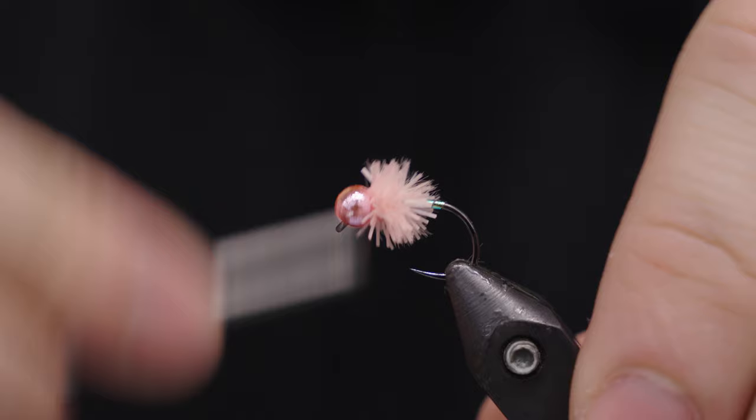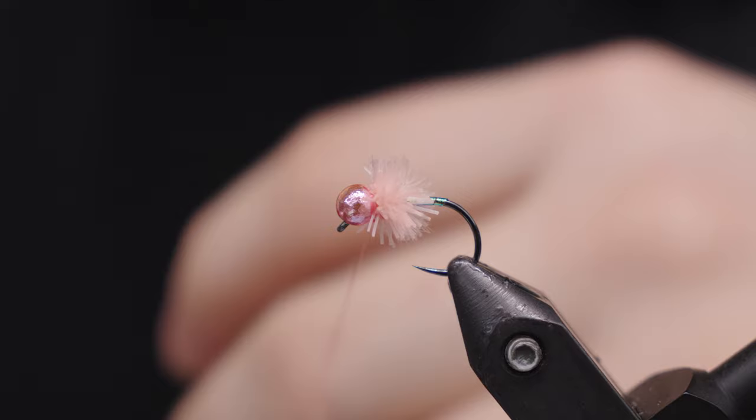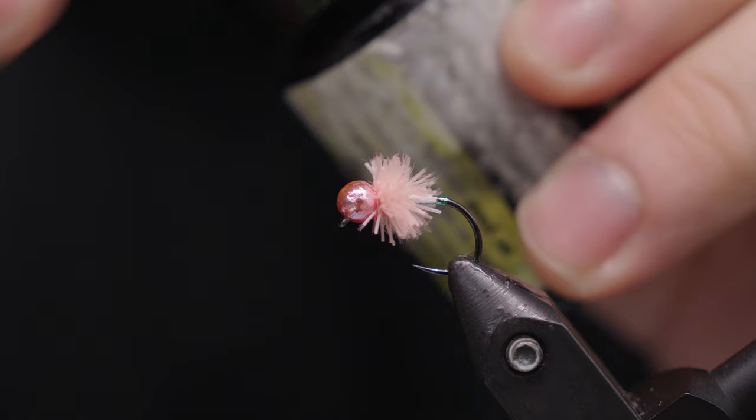We're going to take a couple more wraps to lock that in up there, and then we will whip finish. And then I'll lock the thread wraps in up here with some UV resin and we'll call it good. It's ready to fish.